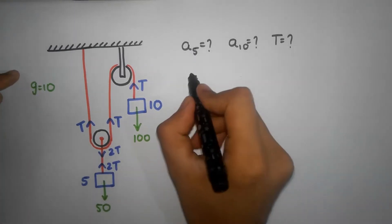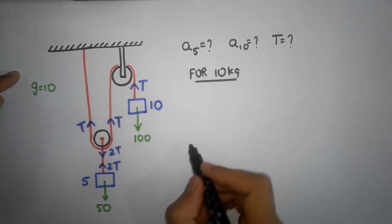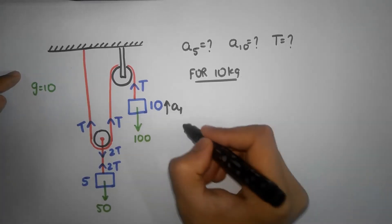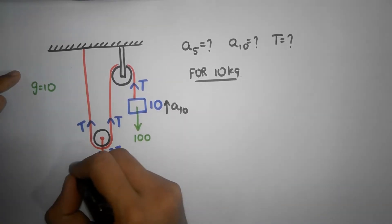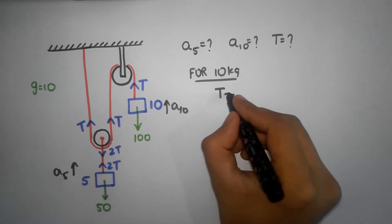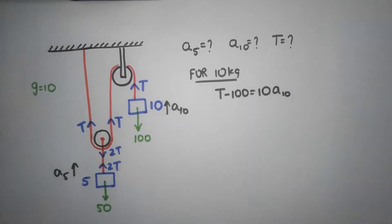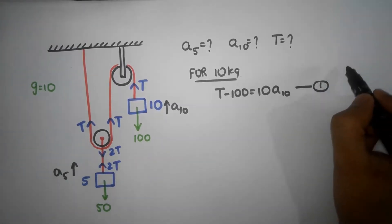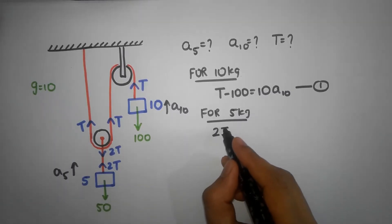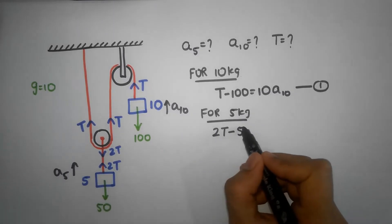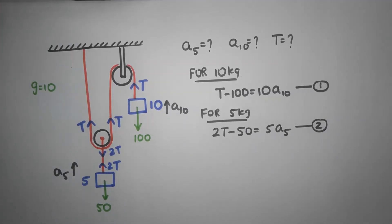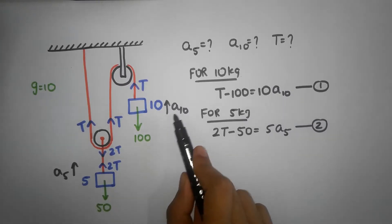We can now build equations. For the 10 kg mass, taking upwards as positive and assuming acceleration A10 upward: T − 100 = 10 × A10. That's equation 1. For the 5 kg mass, assuming acceleration A5 upward: 2T − 50 = 5 × A5. That's equation 2. Now we need a constraint equation that connects A10 and A5.